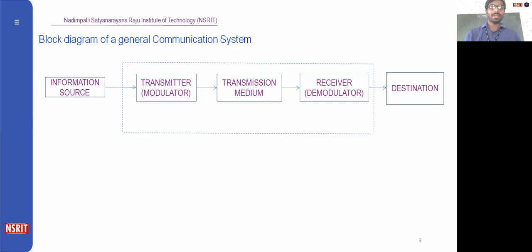We need modulation because our information source is a weak signal, so it cannot be transmitted over long distances easily. It will be modulated with the help of a carrier signal in order to provide more strength. After increasing the strength of the information source signal with the help of the carrier signal, we provide it into the transmitting medium.